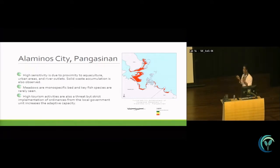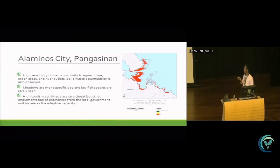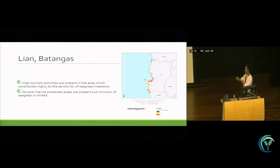This is Alaminos, Pangasinan, which is an area where most fish pond areas are. The seagrass beds have high vulnerability because of proximity to aquaculture, urban areas, and river outlets. Solid waste accumulation is also observed. The seagrass meadows in this area are monospecific, and fish species that shelter in seagrass beds are rarely seen. There are also high tourism activities due to a group of islands attracting tourists, which contributes to the higher vulnerability of seagrass meadows in this area.